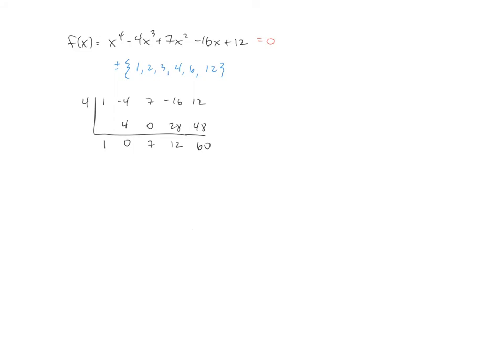All right, so the last number that we're going to test is going to be the number 2. Again, you can see that it is in the list of possible rational zeros. I'll go ahead and get my coefficients up there, bring down the 1, multiply, add, and we'll just keep going with this.